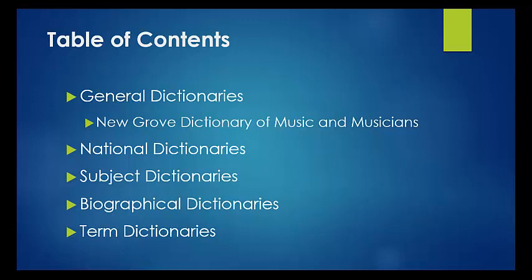When looking for background information on a research topic, it's a good idea to start with a music dictionary or encyclopedia. This can give you background information on particular people, dates, or ideas associated with your research topic. These reference sources can also help you to see where your topic may be too broad or too narrow for the assignment at hand. You'll also find some really useful tools in these reference sources. Some of them contain composers' works lists or extensive bibliographies that can lead you to further research on your topic.